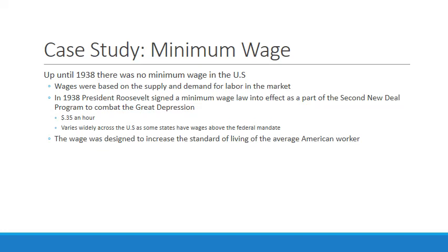Minimum wages are price floors created to increase the standard of living. What we learned about price floors is that they create surpluses — in this case, the surplus would be the workers themselves. Minimum wage, like rent control, is a divisive issue because it creates a surplus of labor. We don't call it a surplus of labor; rather, we call it unemployment.